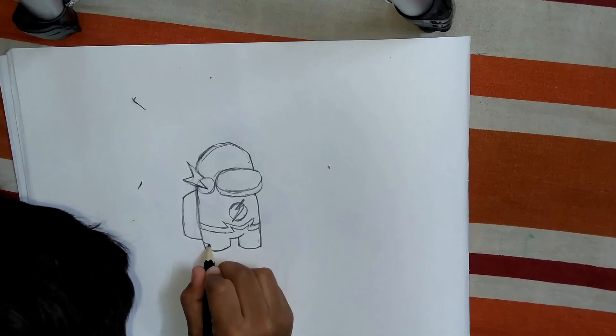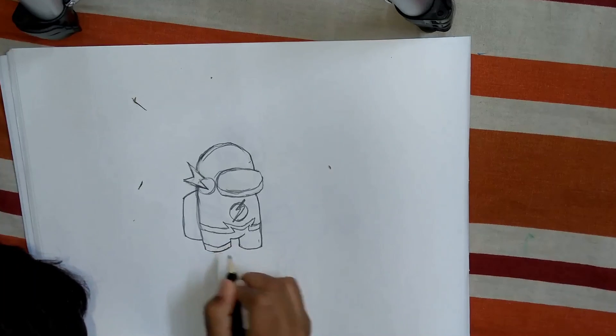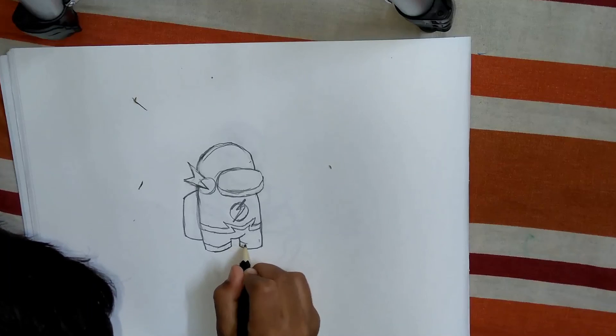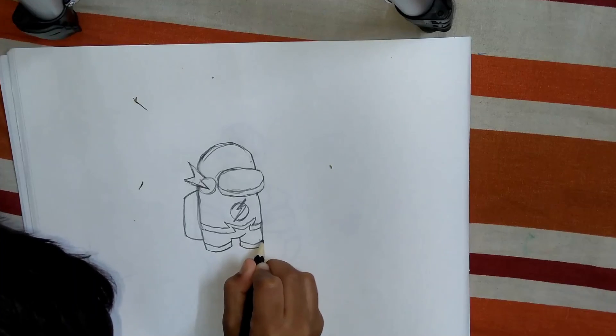Draw triangles here like this, and do the same thing on the right side, like this.